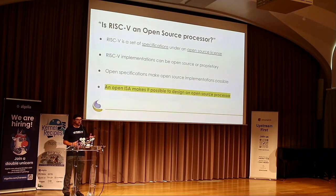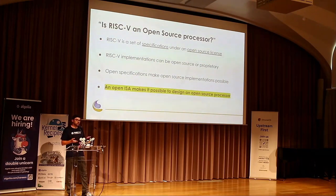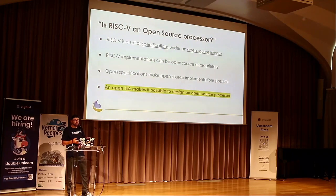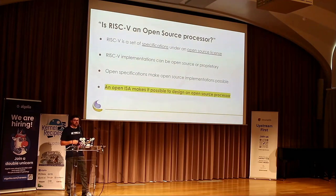A common question: is RISC-V an open source processor? RISC-V itself is just a set of specifications under an open license. RISC-V implementations can be open source or proprietary — just because something says RISC-V doesn't mean the implementation is open source. But open specifications make open source implementations possible, and an open ISA makes it possible to have an open source processor.